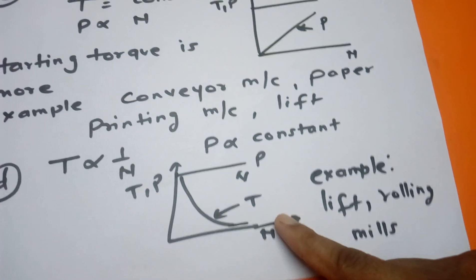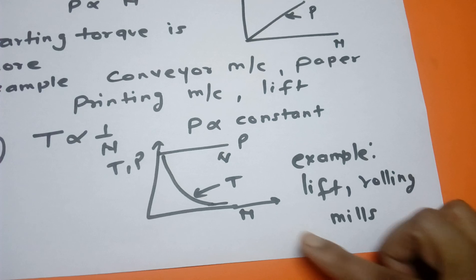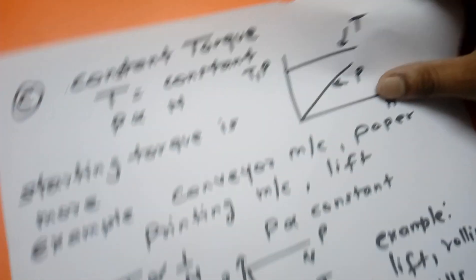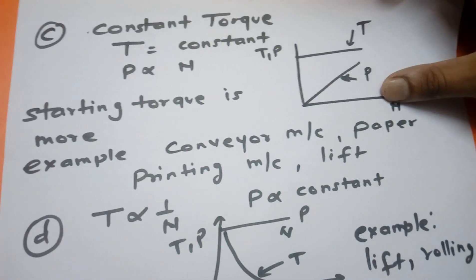As torque starting torque is very high, as speed increases, the torque starts to approach zero. This type of torque we are using, this type of load we are using in lift and rolling mills. So this is all about the load types and characteristics. Thank you very much.